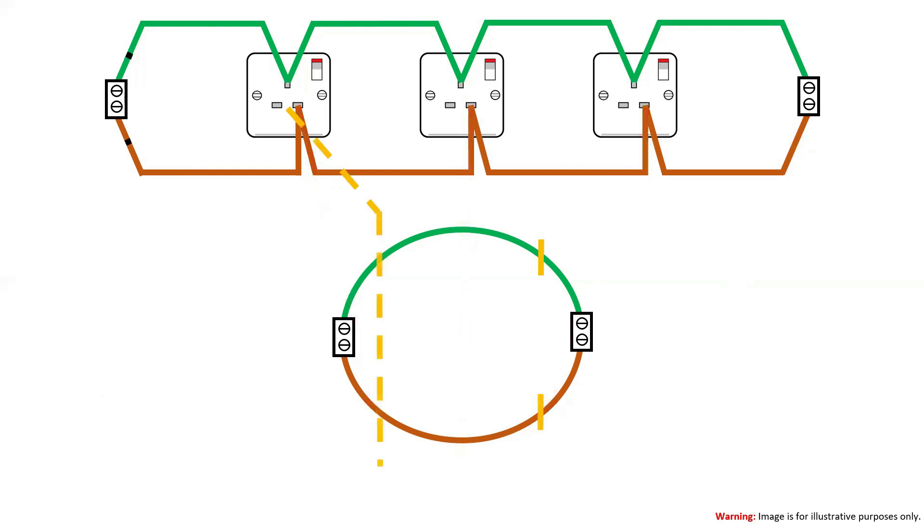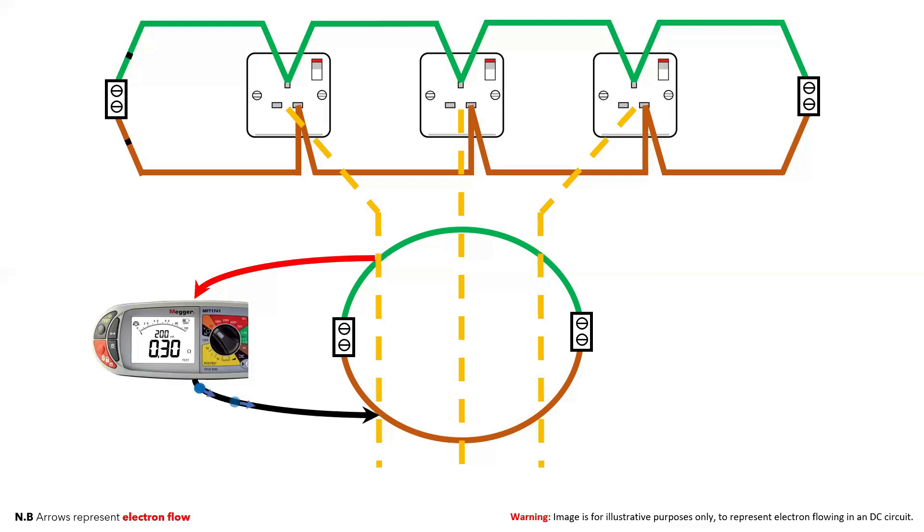Now I'm going to join those CPC and line marks up to represent our socket positions at each socket within the ring. Now what you will see is that when we test for continuity at the first point, most of the electrons flowing through the circuit will travel easiest down the path of least resistance, which in this instance is the small loop in the circuit, as there are less electrons to move and less energy required to do so. This is represented by low resistance reading.